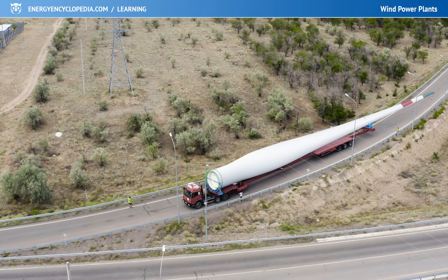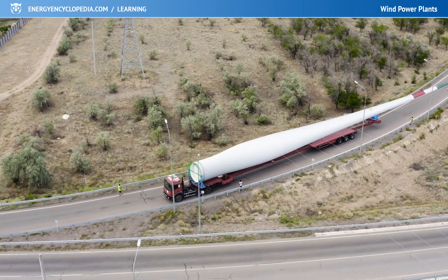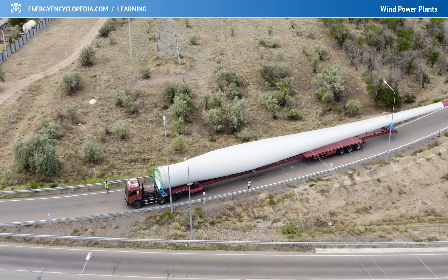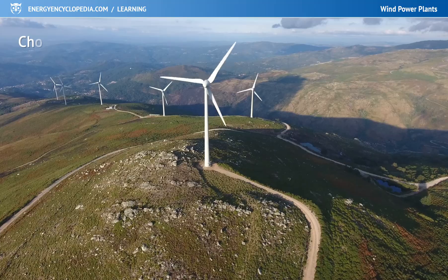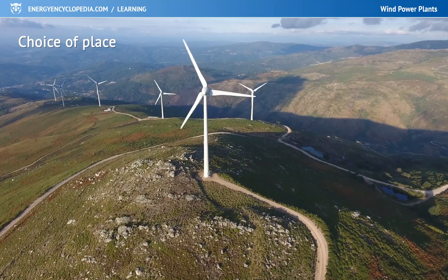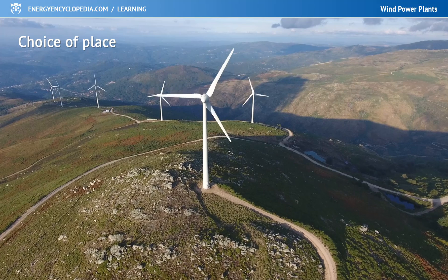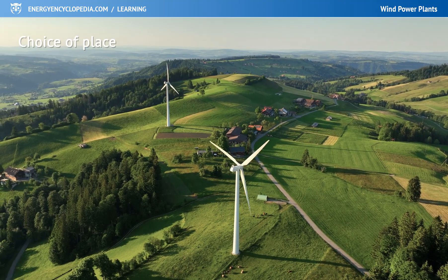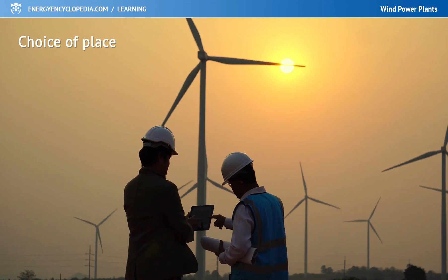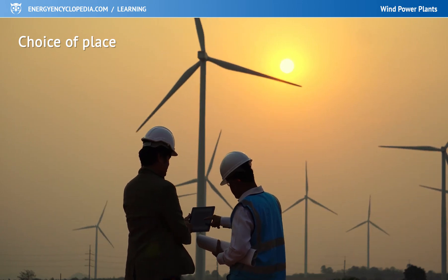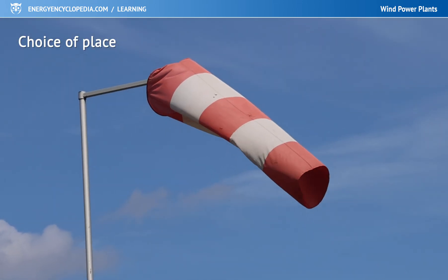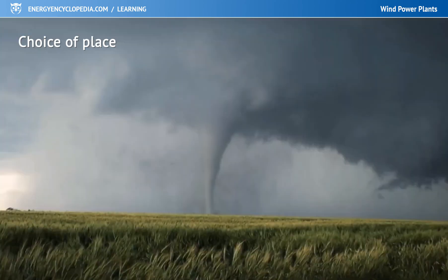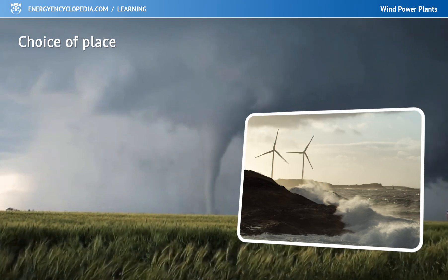Blades made of fiberglass or carbon fiber already exceed 100 meters in length, which increases the requirements for their manufacture and transport. The choice of site for a wind farm is essential — it only makes sense to build where the wind blows at optimum speed for most of the year. Long-term wind speed measurements are often taken before construction, ideally at the height where the rotor will eventually be located. Extremes in weather must also be taken into account.